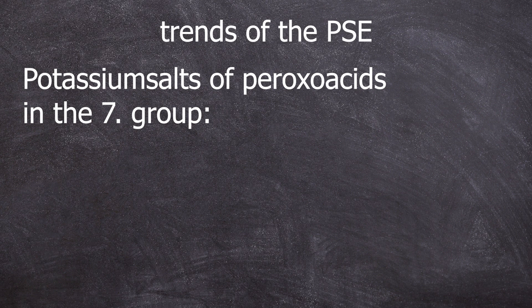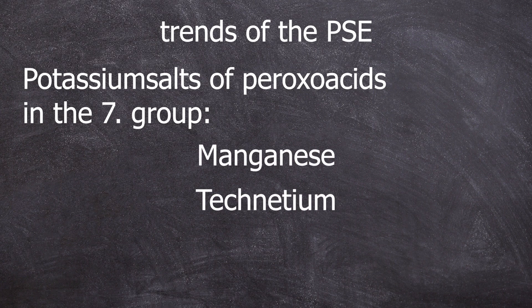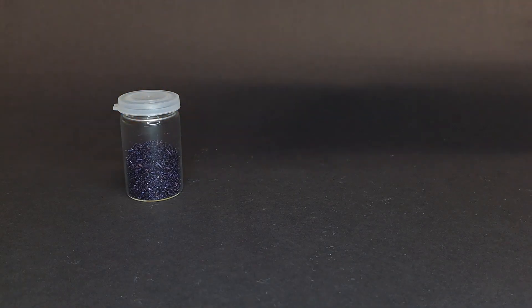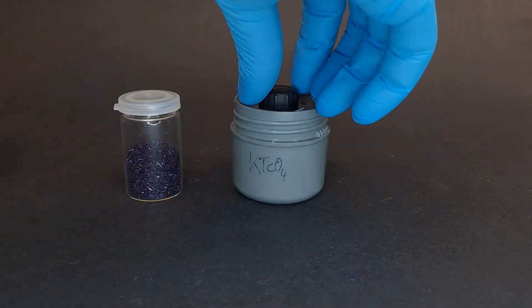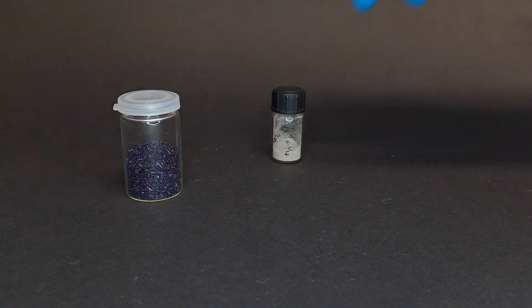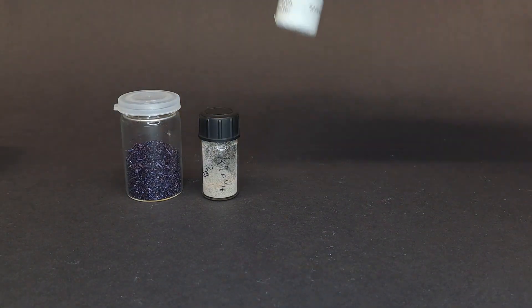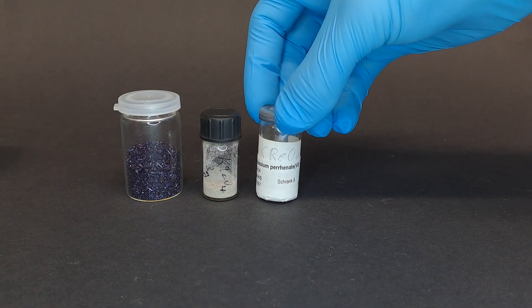Today, let's compare the potassium salts of the oxoacids of group 7 elements. Group 7 in the D block includes manganese, technetium, and rhenium. So what we have here is potassium permanganate, potassium pertechnetate, and potassium perrhenate.